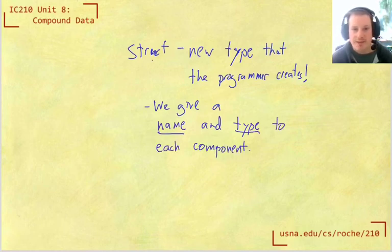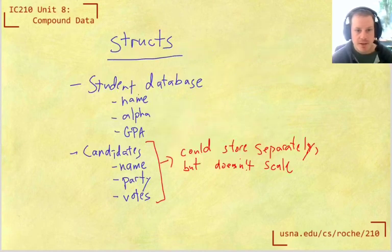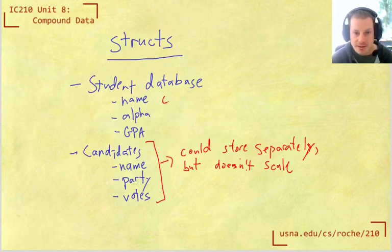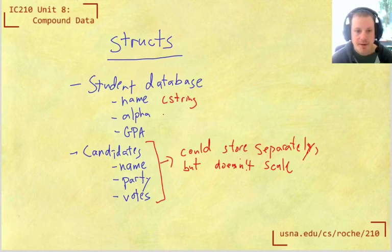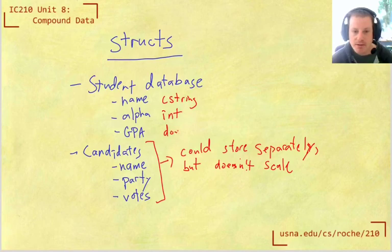So for the examples that we just talked about, if we have a student database with like a name, an alpha, and a GPA, then maybe the name would be like a C string, or a character array. The alpha should probably be an int, and the GPA might be a double, because that can be like a floating point value.